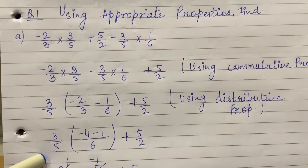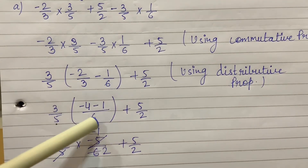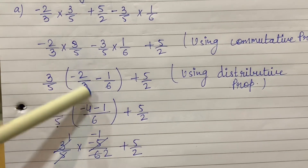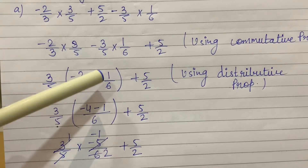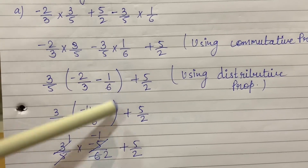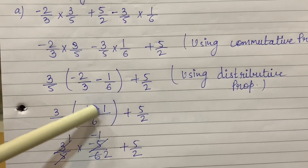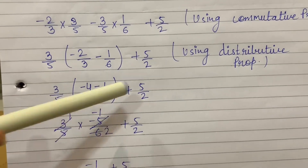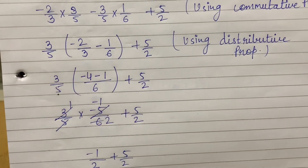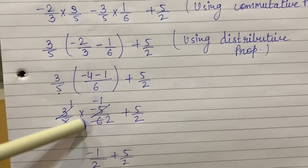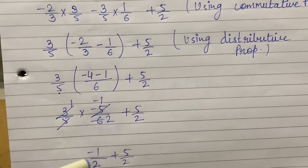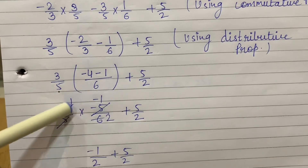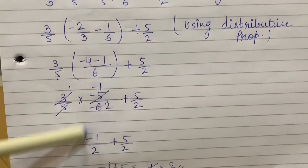Taking the common factor is called distributive property. Now, taking minus 3 upon 5 as common, we find the LCM of 3 and 6, which is 6. So 3 twos are 6, minus 3 into 2 is minus 4; 6 ones are 6, so 1 into 1 is minus 1. Minus 4 minus 1 is equal to minus 5. Then 5 upon 2 continues as it is.